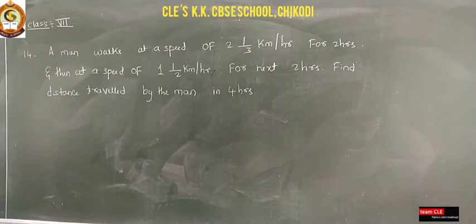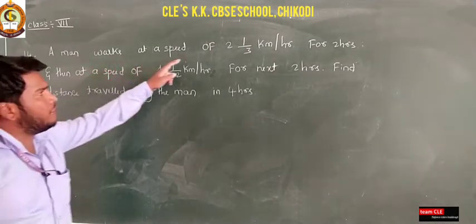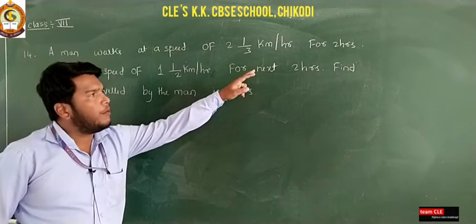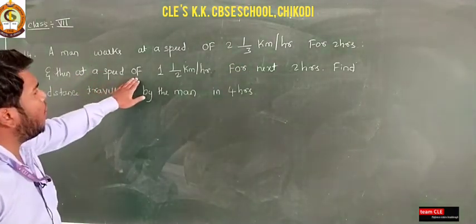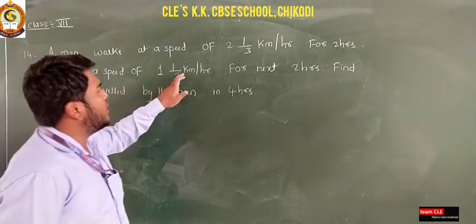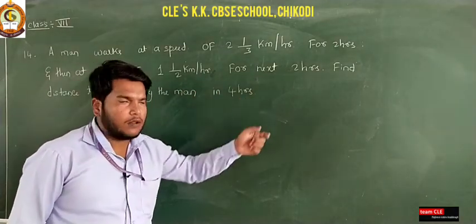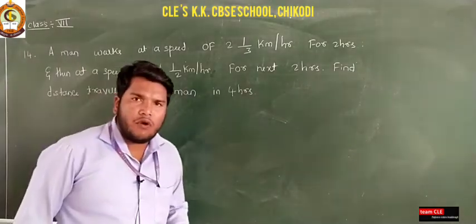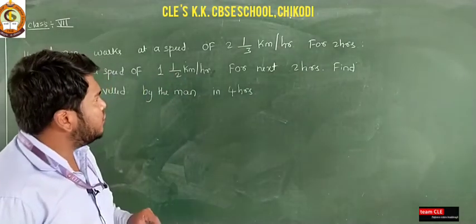Hello dear students, welcome back to the 14th question. The 14th question says: a man walks at a speed of 2 and 1/3 kilometers per hour for 2 hours, and then at a speed of 1 and 1/2 kilometers per hour for the next 2 hours. Find the total distance travelled by the man in 4 hours.